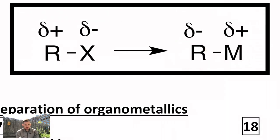What they do is they change the polarity of the bond that we're used to seeing because they come from halides, things like alkyl bromides or chlorides, which are polarized toward the more electronegative halogen.